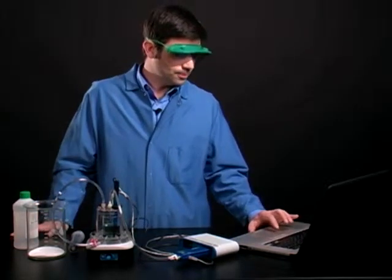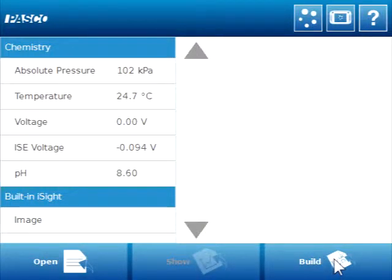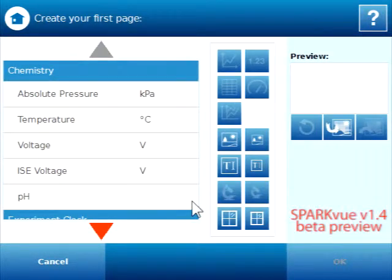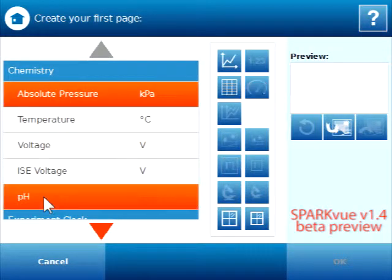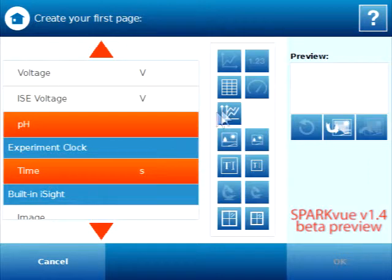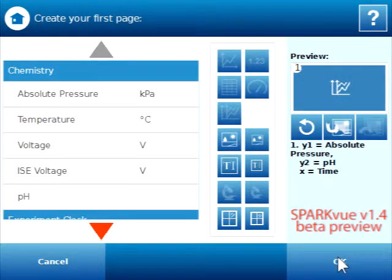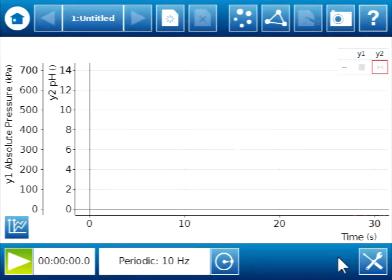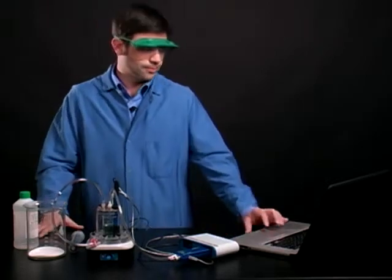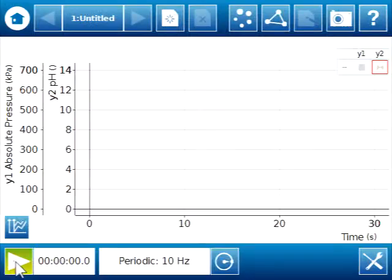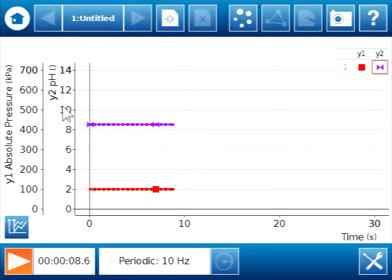So first, I'm going to set up my spark view. And I'm going to build a graph using, again, using the multiple y-axis. This time, I'm going to look at pressure and pH as a function of time. And again, I'm going to get a baseline just to see what's going on. So I'm going to hit play. And I have my Y1, which is my pressure, around 100 kilopascals. And my Y2, which is my pH, which is around 8.5 units.